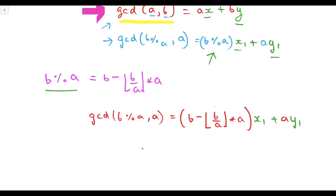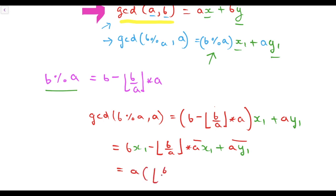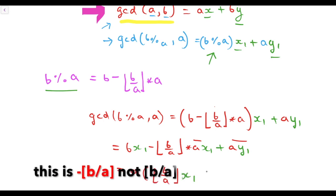So this will become B x1 minus B by A times A x1 plus A y1. Now let's take A common from these two values. This will become A times B by A times x1 plus y1 plus x1 times B.